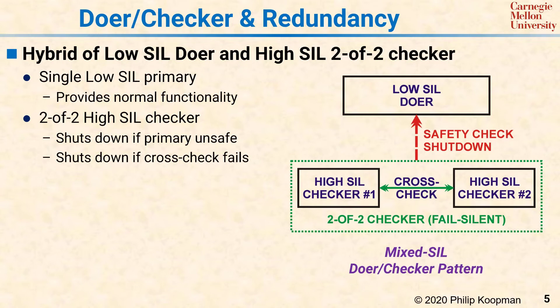At this point, you're noticing that we're using three computers to do the job of one. But the reason that this can still be a win is that in many systems, much of the software does not have to be safety critical — only a small amount does. So this pattern lets you put the non-critical software into the doer and have a much simpler, smaller checker piece of software that operates in the two-of-two checker hardware.